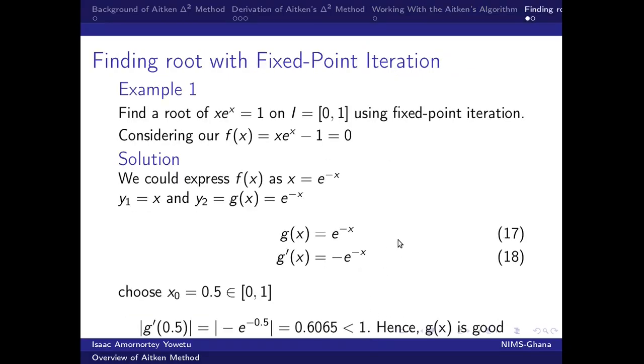So we want to now solve an equation f of x using this interval. So now our f of x can now be expressed in terms of x equal to the whole of this. We happen to get two equations, y1 equal to x, and y2 equal to the g of x, which is equal to e to the power minus x. Our g of x, which is of interest, because we want to use the fixed point iteration. You can watch my video on overview of fixed point iteration.